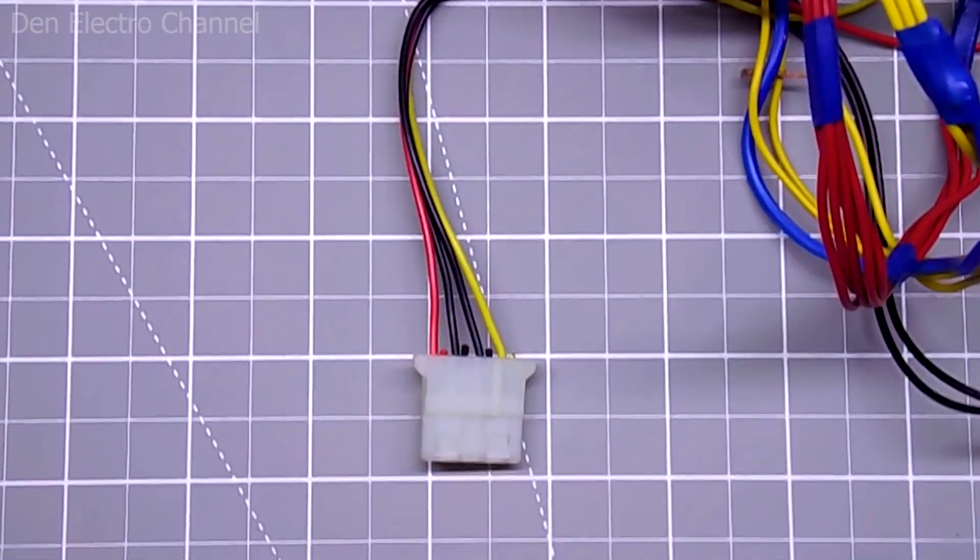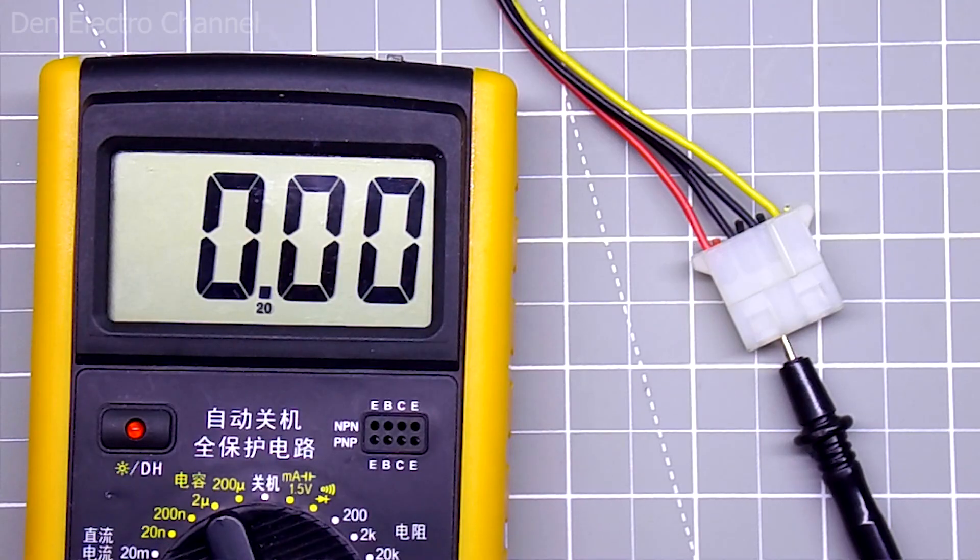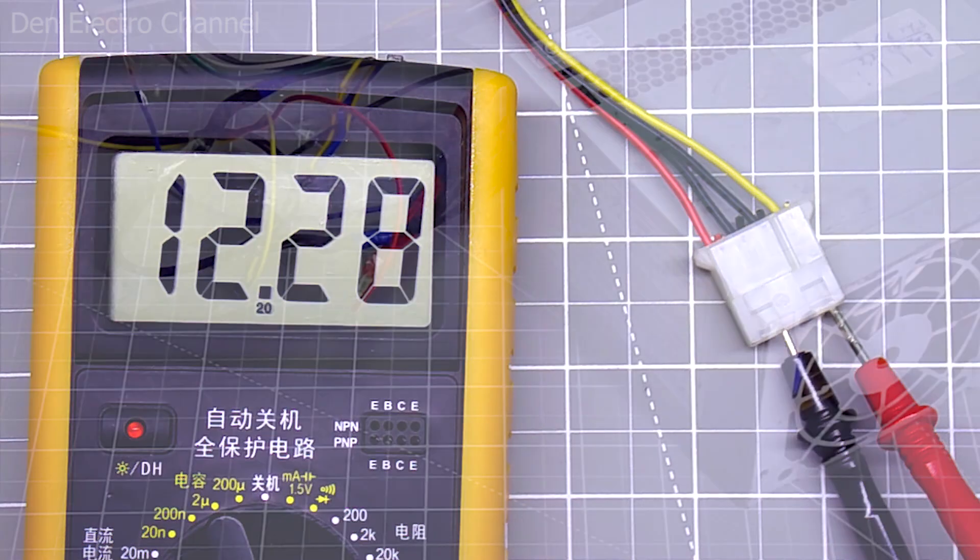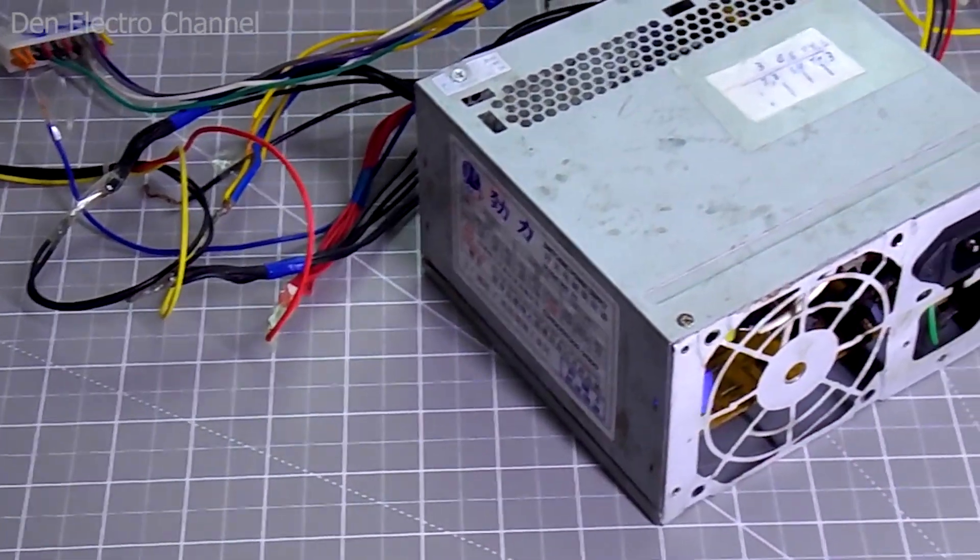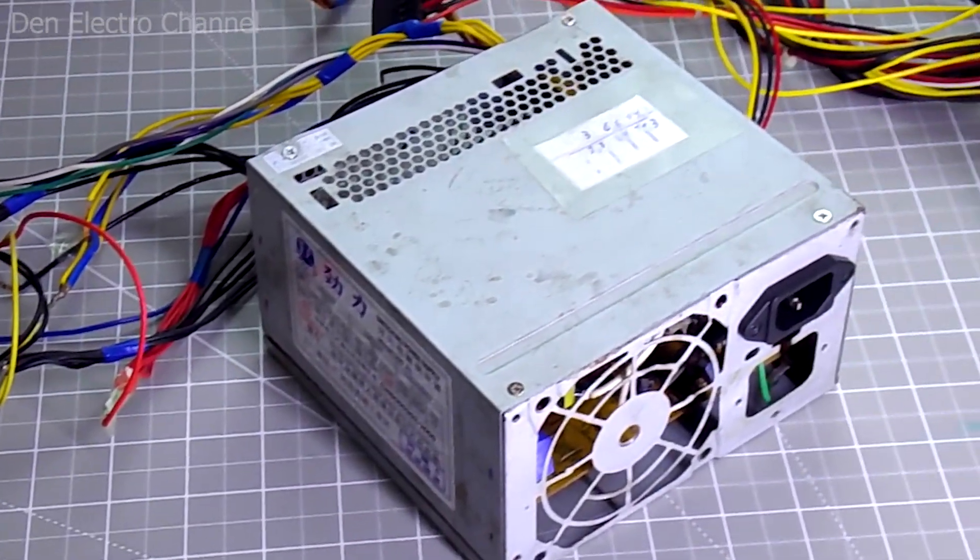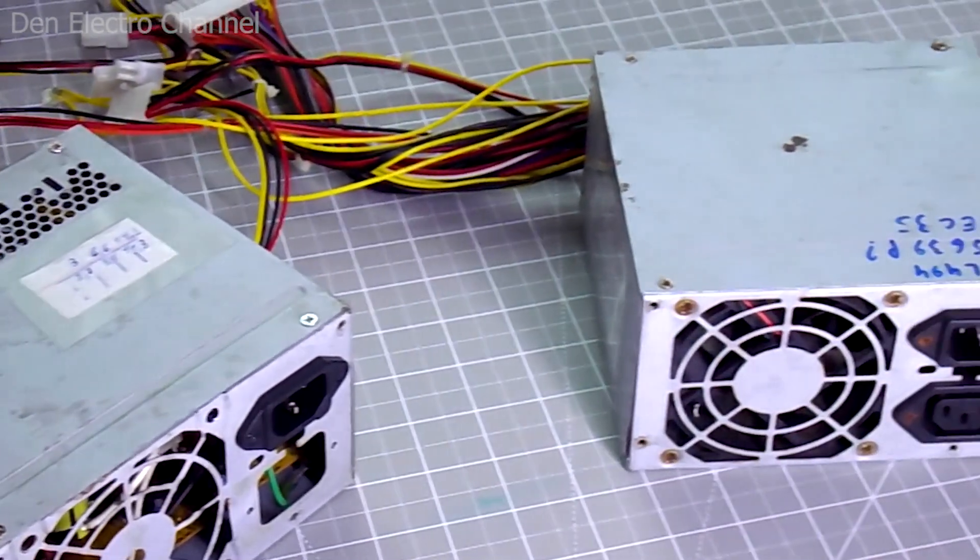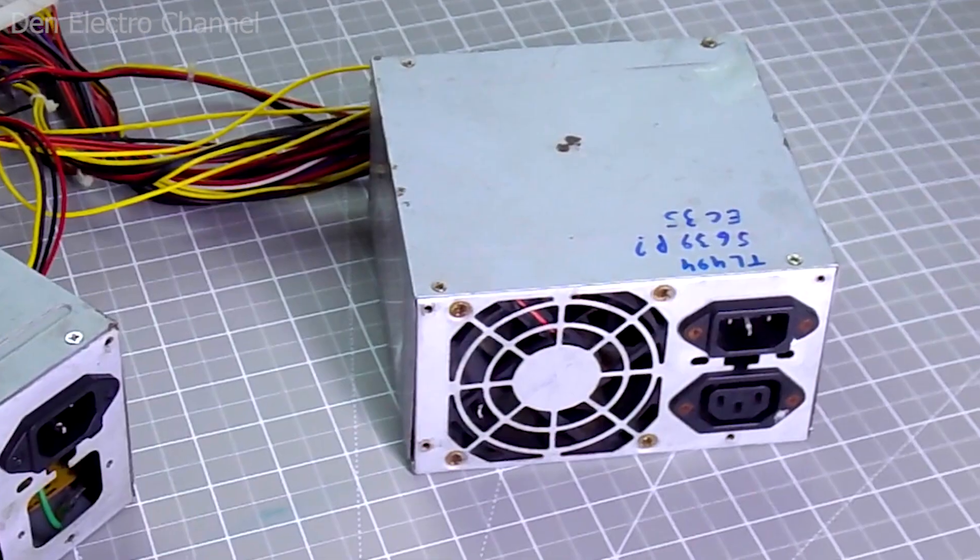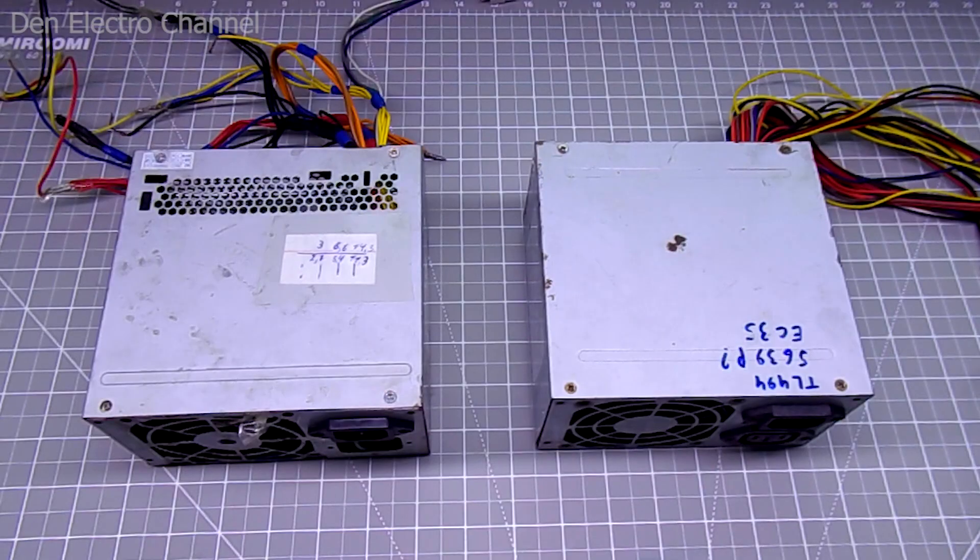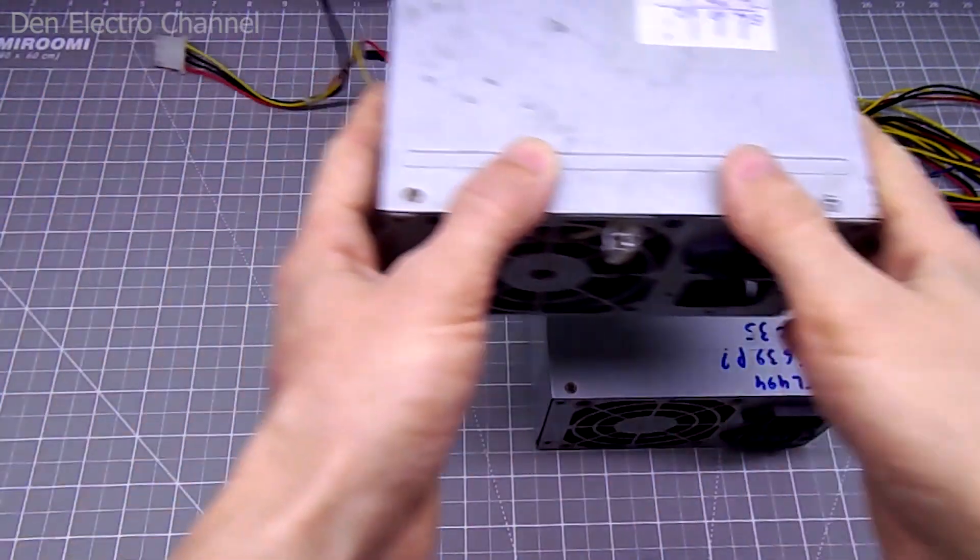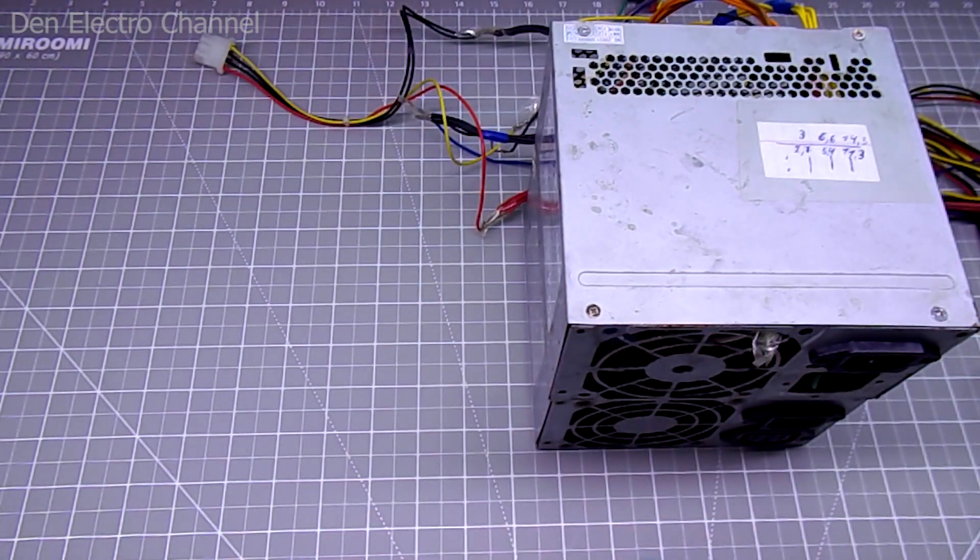These power supplies are quite a good device. They produce several voltages and a good current on each line, but sometimes there are cases when these voltages and currents are not enough. It happens that you need to get 24 volts or a current of more than 10 amperes, but each of my power supplies cannot produce that much. But there is still a way out of this situation. Today we will talk about whether it is possible to connect two ATX power supplies to increase power.